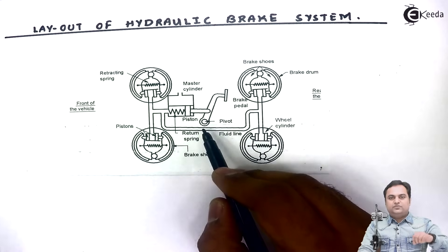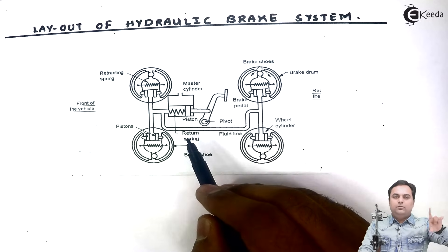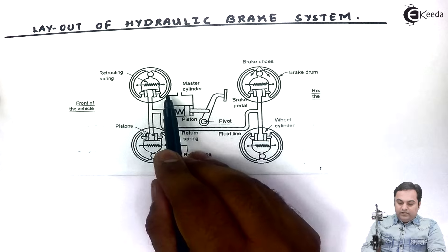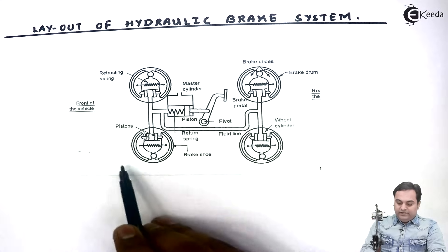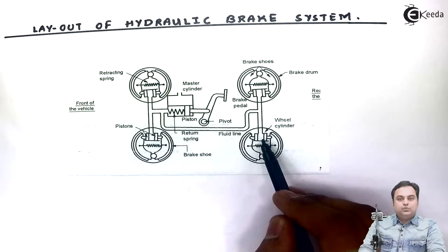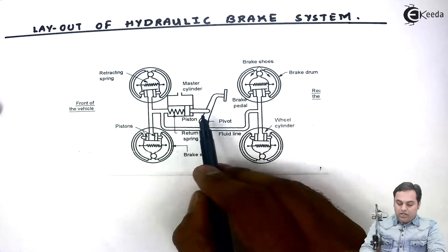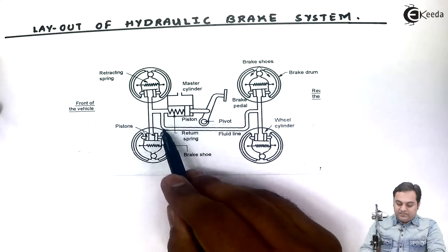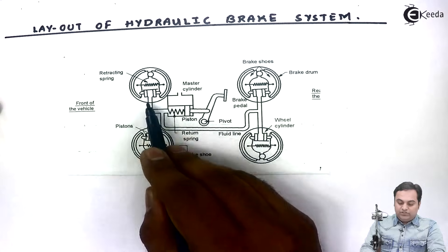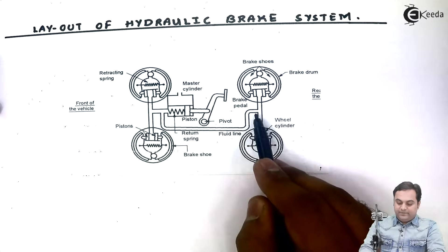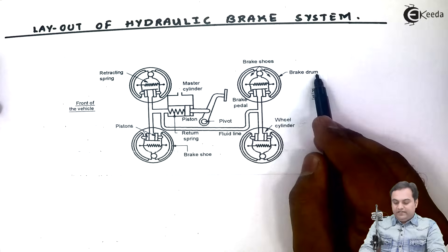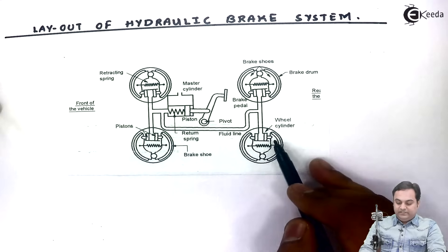The pivot is a fixed point about which the brake paddle will move. After that we have four internal expanding brakes with wheel cylinders. From the master cylinder there are pipelines which go into each of the internal expanding brakes. Here we have brake drum and brake shoes for the internal expanding brake.